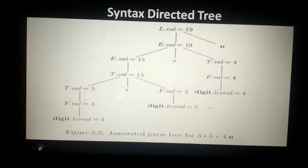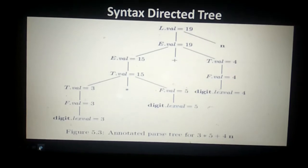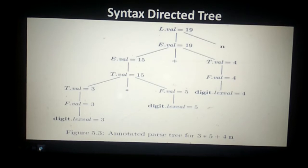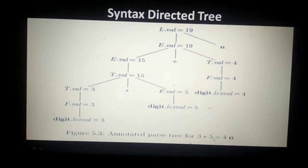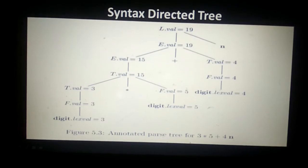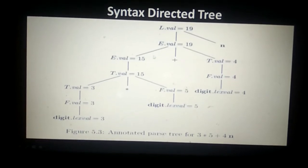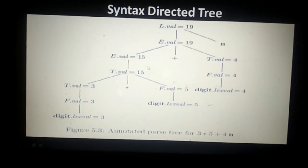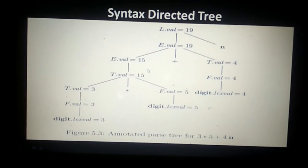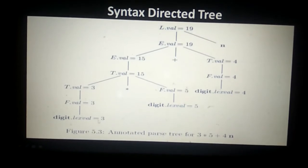Next, let's discuss an example of how we construct the syntax directed tree for given production rules and attribute values. We have to construct the annotated parse tree for the expression 3 * 5 + 4 n, using the productions from the previous example: L produces E n, E produces E plus T, E produces T, T produces T star F, T produces F, and F produces the terminal symbol digit.